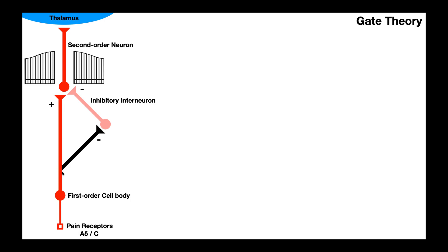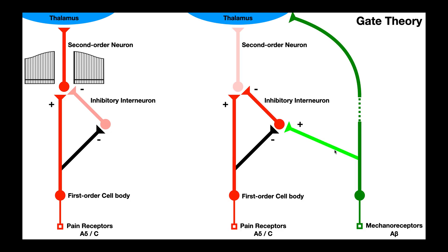Now this unipolar first order sensory neuron is going to be one of two types — it's either going to belong to an A-delta nerve or a C nerve. It turns out we can actually activate another nerve fiber type that will activate this inhibitory interneuron. As of right now, the inhibitory interneuron is turned off. We need to have a way to turn this on, and that will close this gate. To do that, we're going to stimulate nerve fibers that are of A-beta type.